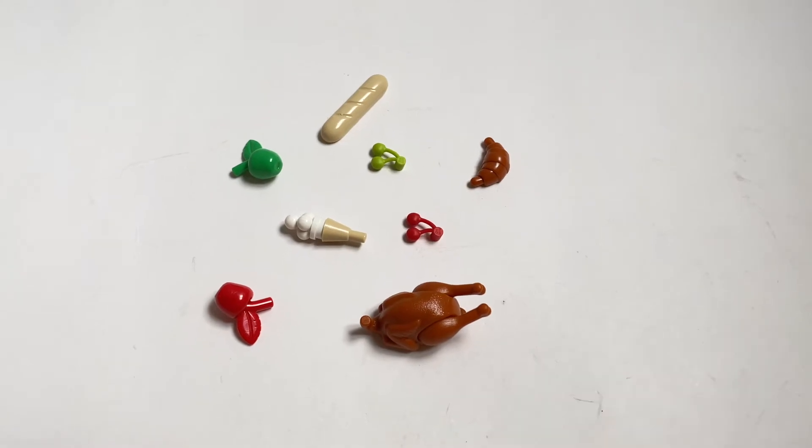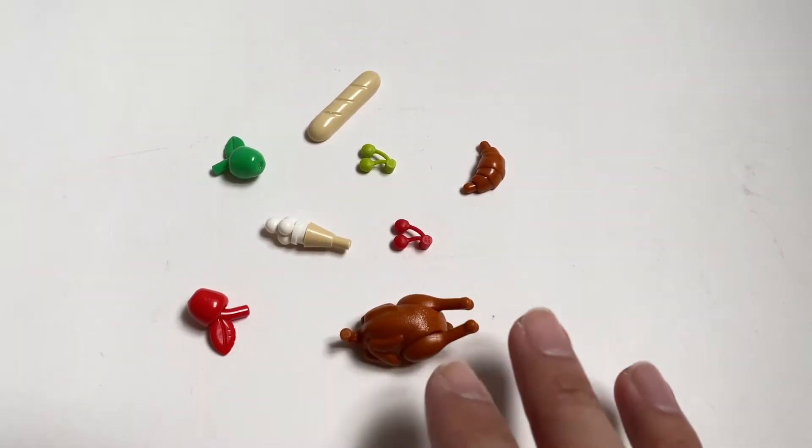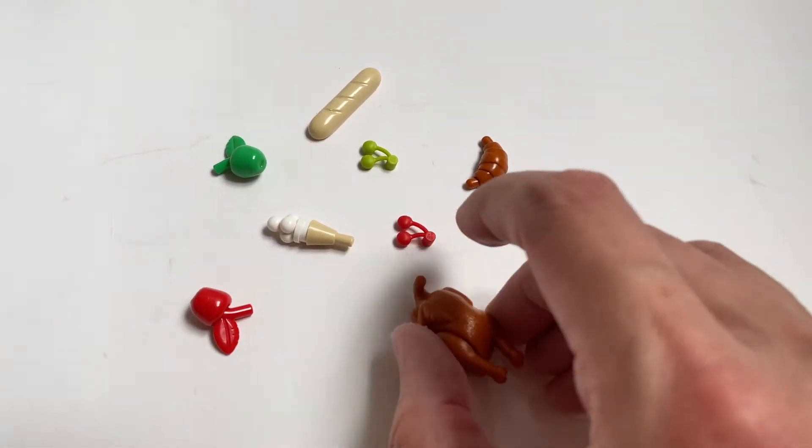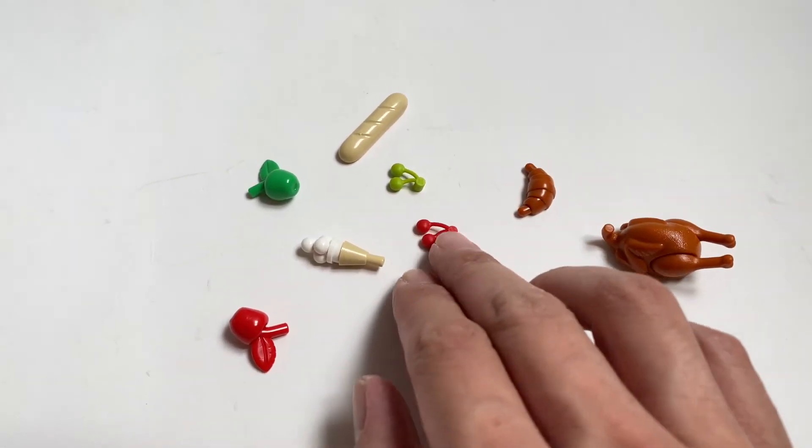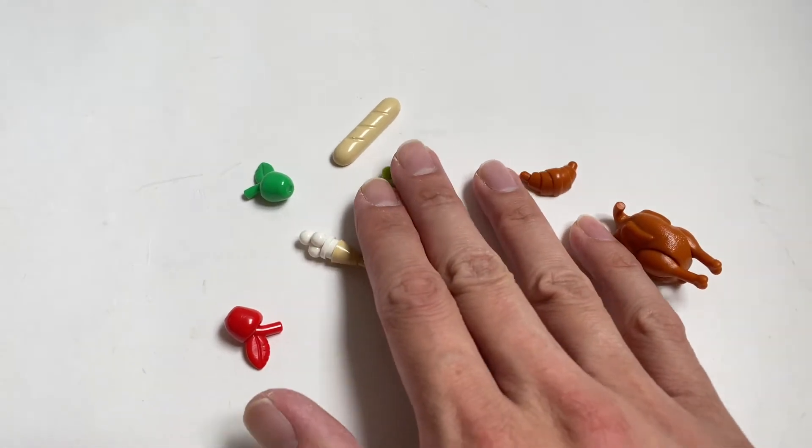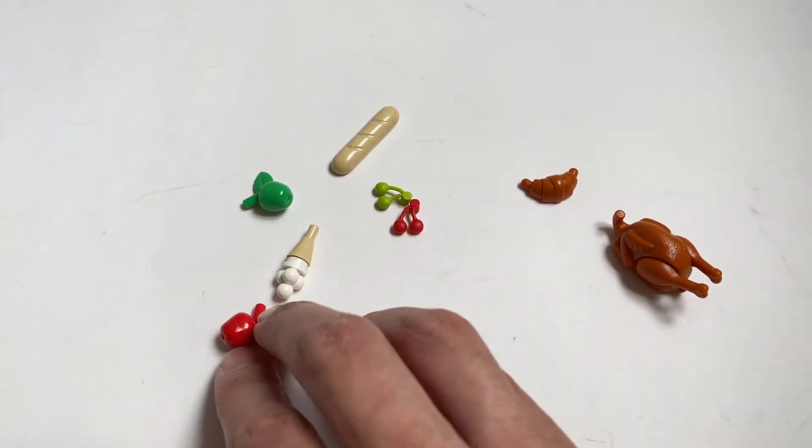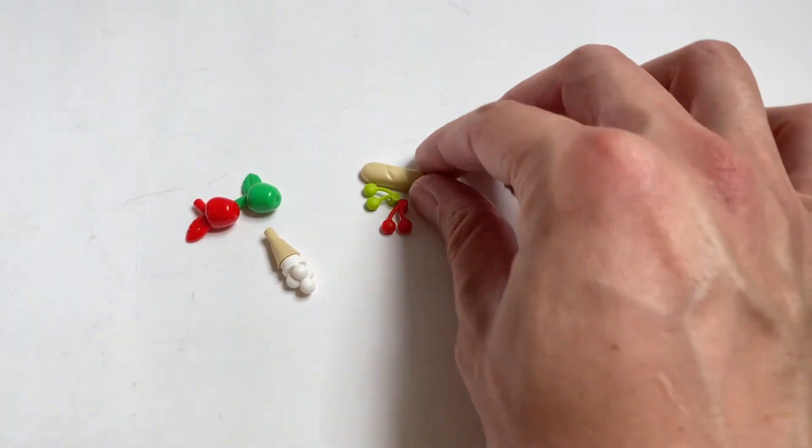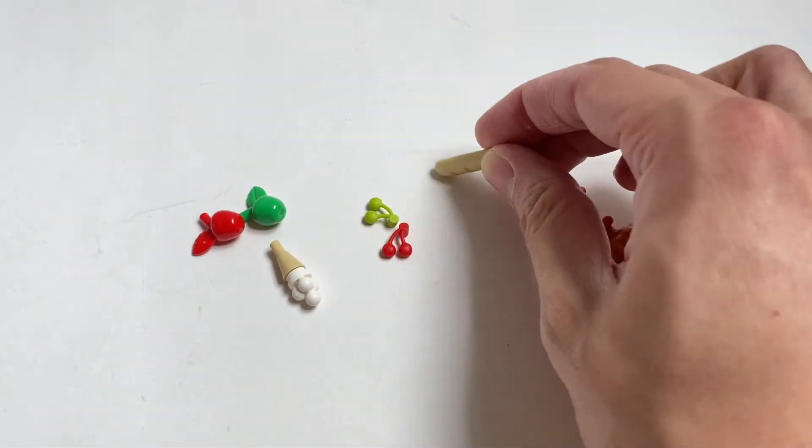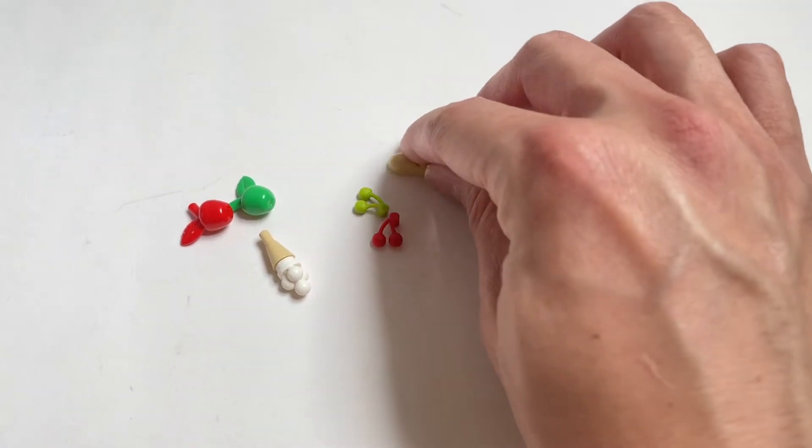We're going to start off with some of the more traditional, older style representation of food. And obviously, the turkey that I mentioned before, the croissant, got some cherries that comes in various different colors. And also the apple and the long bread, which also comes in two different colors.